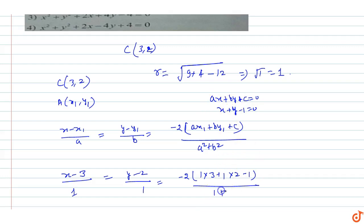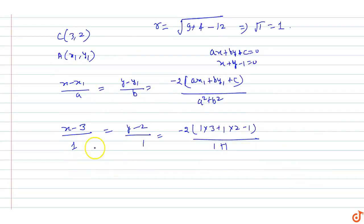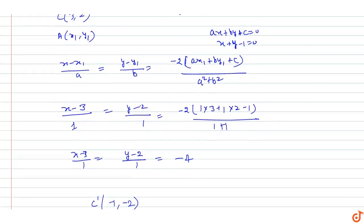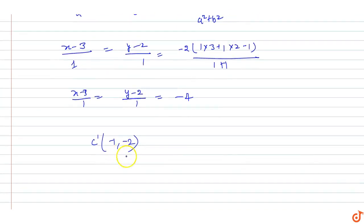Computing the right-hand side: 3 + 2 = 5, then 5 - 1 = 4, divided by 2 = 2, multiplied by -2 gives -4. So (x - 3) = -4, giving x = -1, and (y - 2) = -4, giving y = -2. Wait — the image center C' has coordinates (-1, 1). The radius remains 1, same as the original circle.